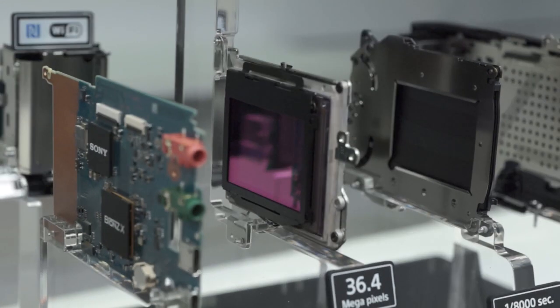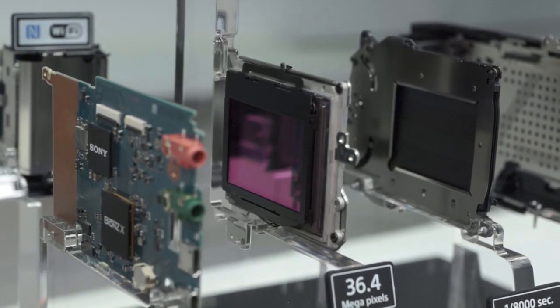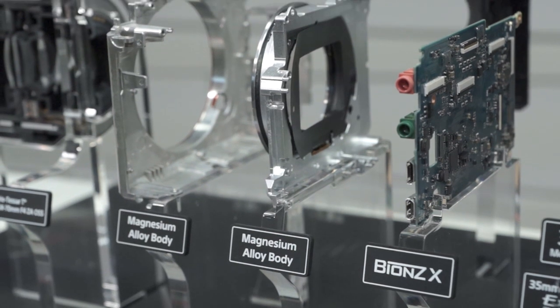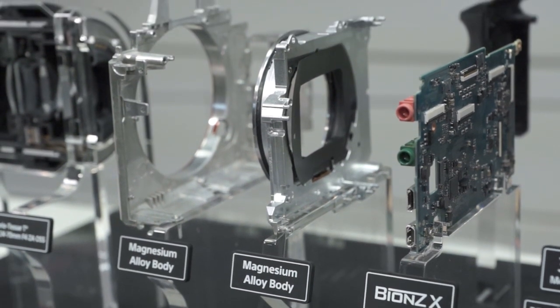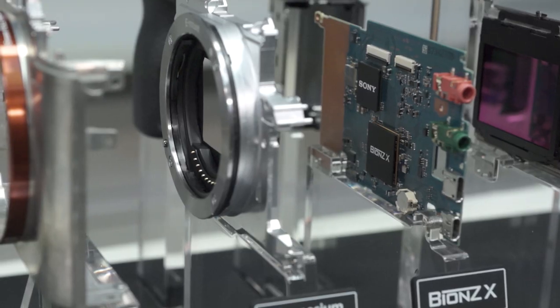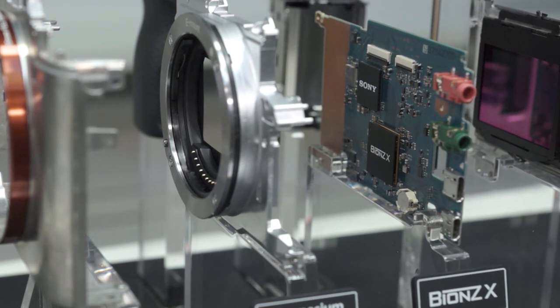Something unique to the A7R is the gapless on-chip lens design, which is basically a number of really small lenses lying on top of one another to allow more light in and detect different colors, increasing picture quality.